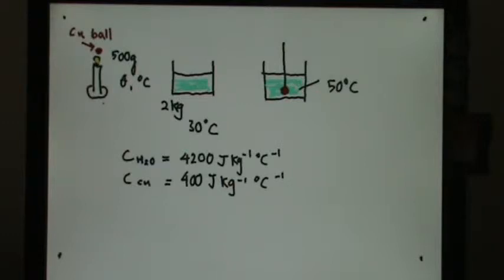In this question, initially we have a copper ball shown here in brown. The copper ball is heated up by this Bunsen burner so it has reached a temperature of θ1 Celsius, which is unknown. The copper ball is 500 grams and the water here is 2 kg with an initial temperature of 30°C.